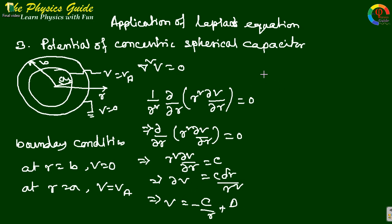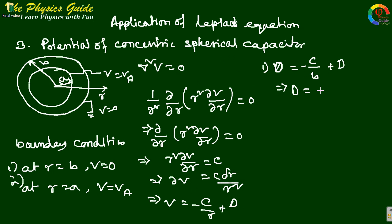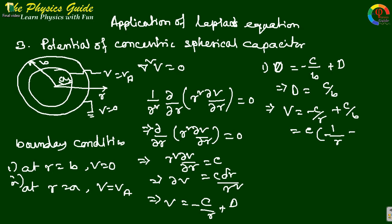Applying boundary condition one — at r = b, V = 0 — we get 0 = -C/b + D, so D = C/b. Substituting back, V = -C/r + C/b = C(1/b - 1/r).